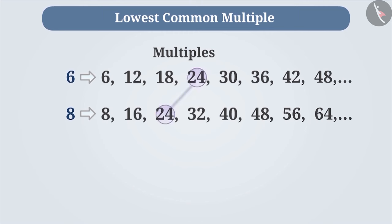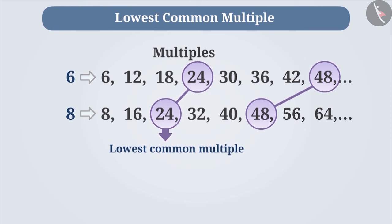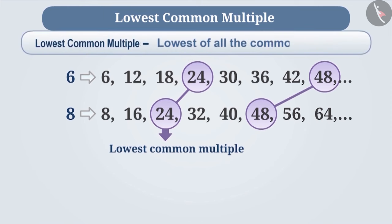Among the multiples of 6 and 8, 24, 48, etc. are common. These numbers are called common multiples of 6 and 8. 24 is the lowest number among the common multiples of 6 and 8. Therefore, it is called the lowest common multiple. That means, for any two or more given numbers, the lowest of the common multiples is called the lowest common multiple or LCM.